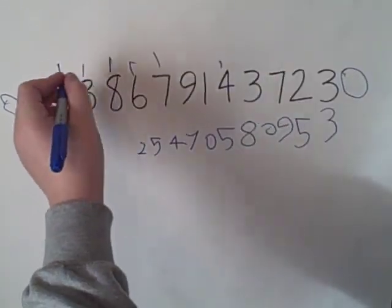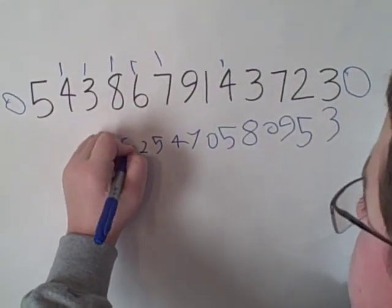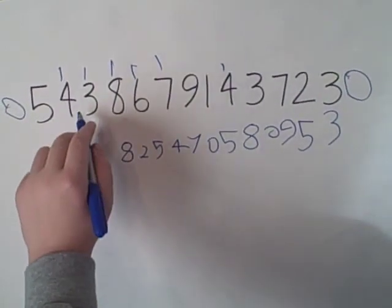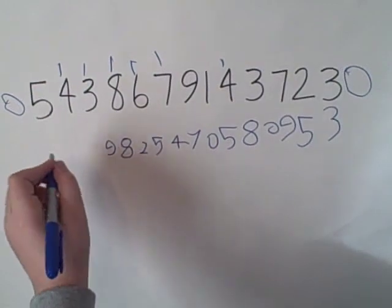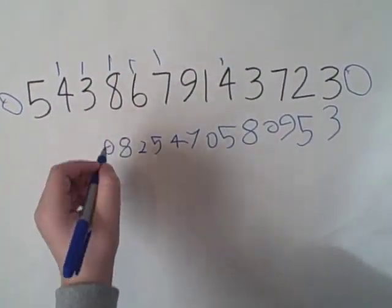3 plus 4, 7. Add your 1, 8. Then 4 plus 5, 9. And last but not least, 5 plus 0, which is 5.